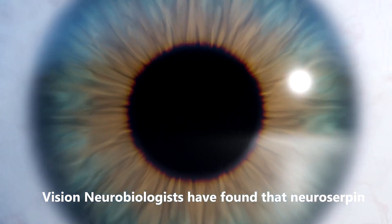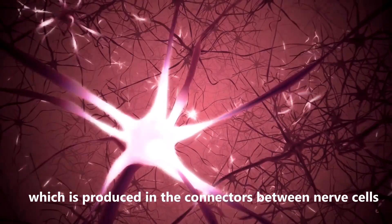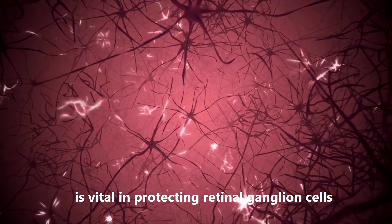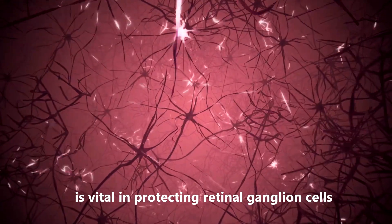Vision neurobiologists have found that neurosurpin, which is produced in the connectors between nerve cells, is vital in protecting retinal ganglion cells.